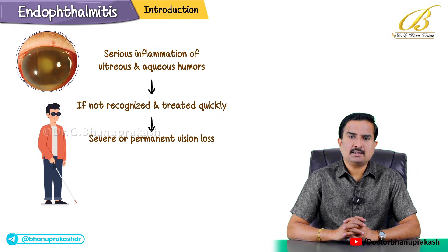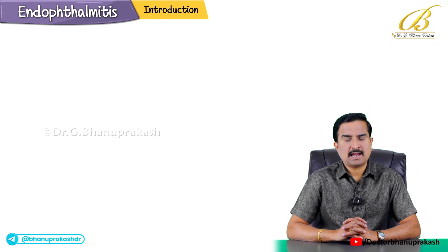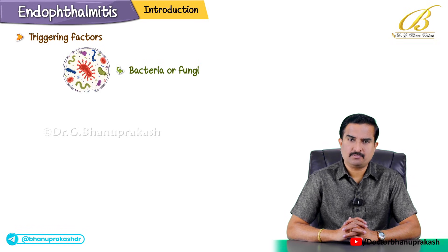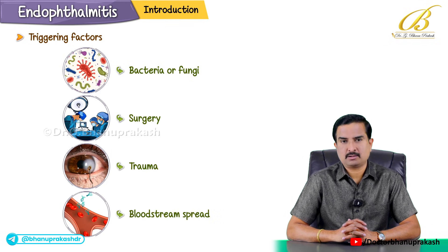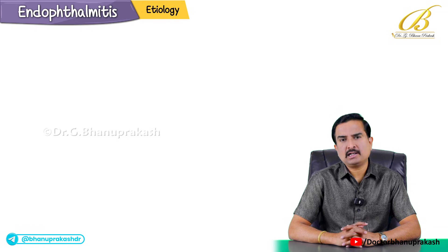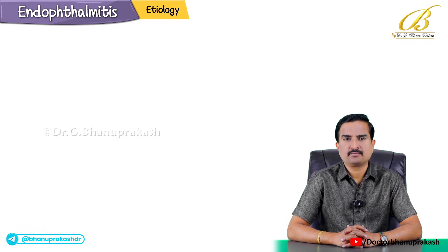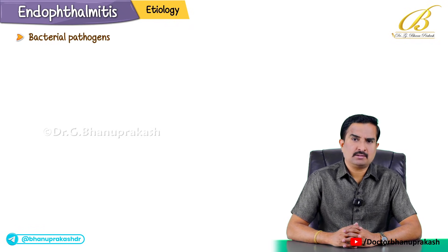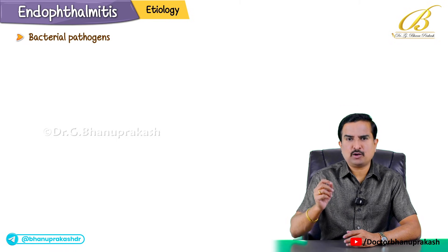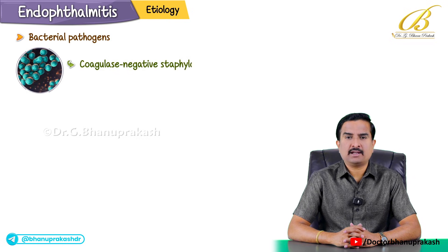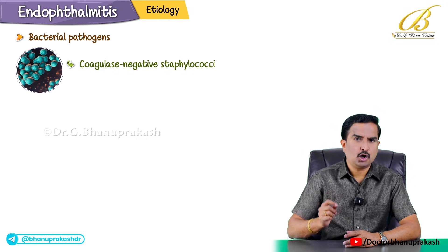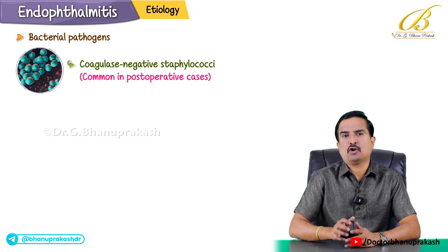Endophthalmitis can be triggered by bacteria or fungi and may occur after surgery, trauma, or via bloodstream spread called endogenous infection. Bacterial pathogens are the most frequent culprits. Coagulase-negative staphylococci are notably common in post-operative cases.